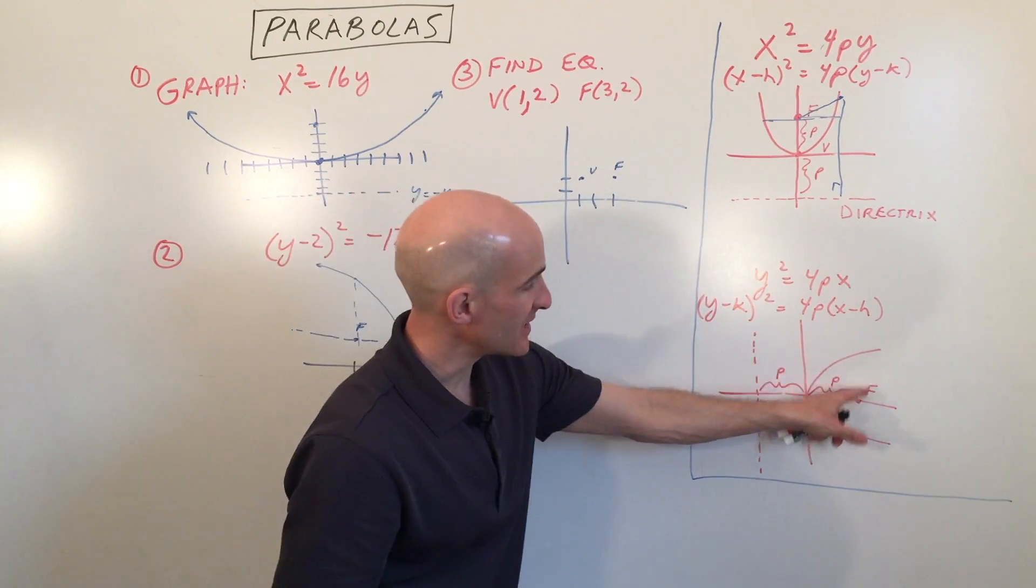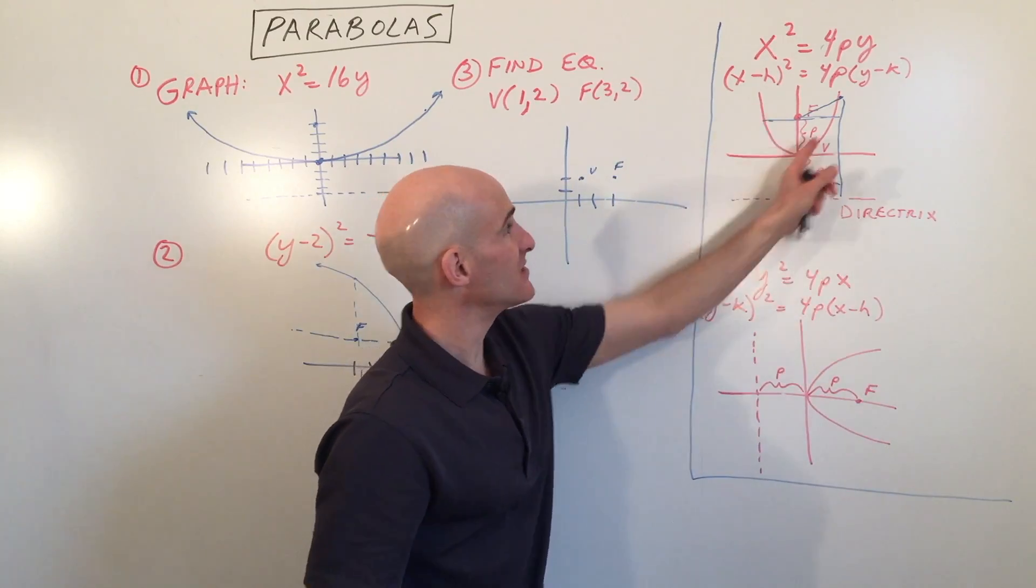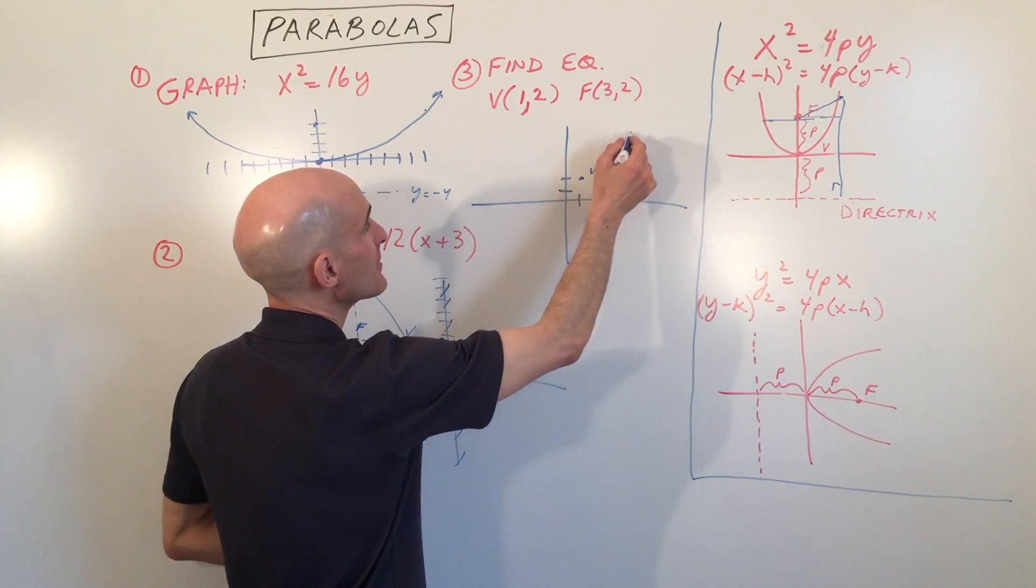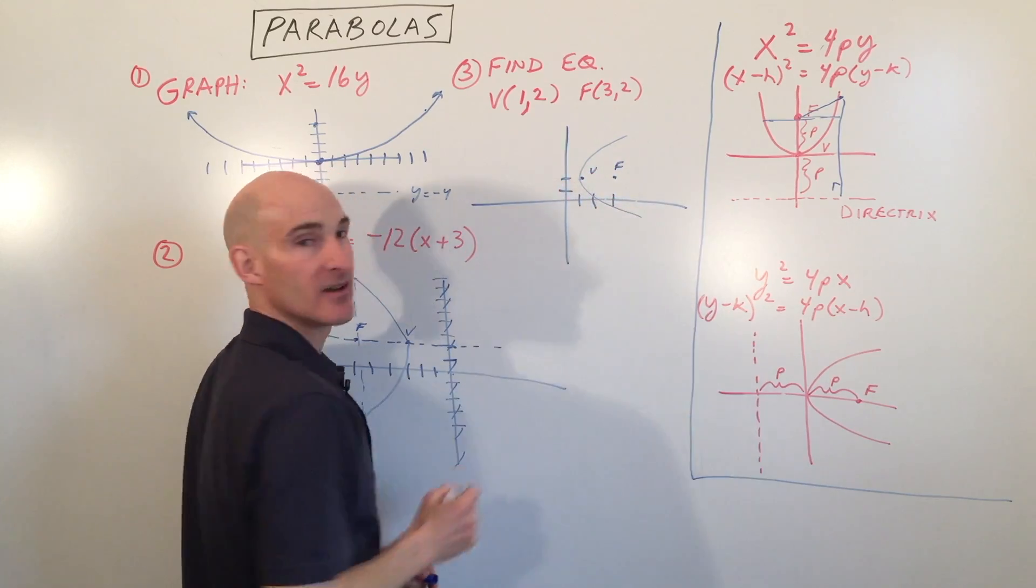So what that tells us, we know that the parabola is going to be opening towards the focus. It's like inside of the parabola in a sense. So we know it's going to look something like this, opening to the right.